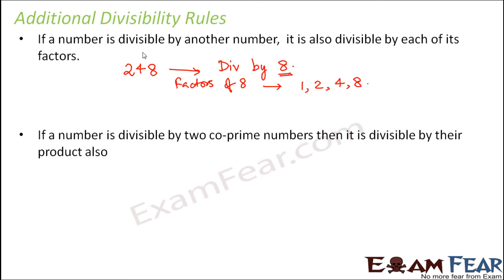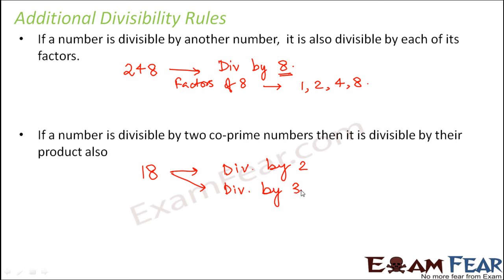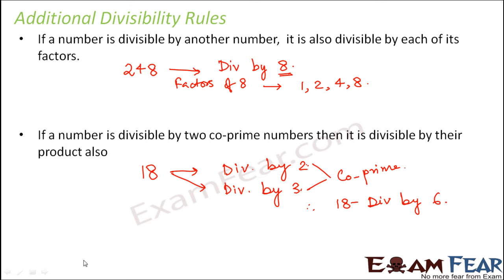Next rule: if a number is divisible by two co-prime numbers, then it is also divisible by their product. For example, 18 is divisible by 2 and also by 3. Since 2 and 3 are co-prime — they have only one common factor, which is 1 — then 18 will also be divisible by the product of 2 and 3, which is 6.